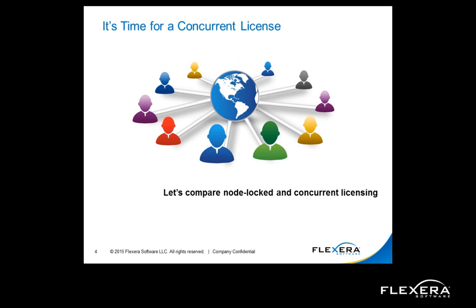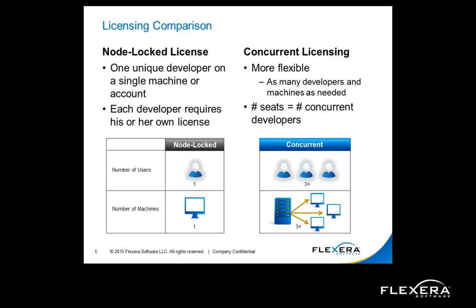For InstallShield or InstallAnywhere, let's compare the node-locked and concurrent license models. InstallShield and InstallAnywhere are available in two different models: node-lock licensing and concurrent licensing. Here's how they work. A node-lock license is valid for a single developer on a single machine or single user account. With this model, each developer requires their own license. If that developer needs access on two machines, they would require a second license.